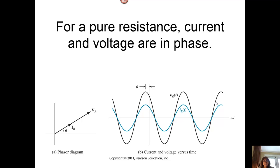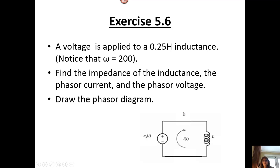For resistance, everything is in phase. We have no phase change for a resistive circuit. The voltage and the current are totally in phase — no phase change.